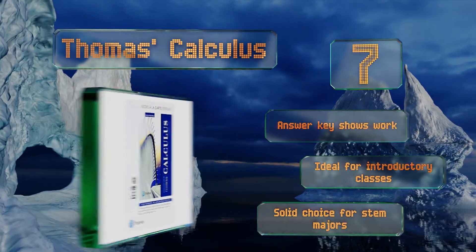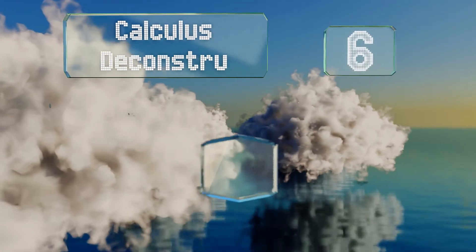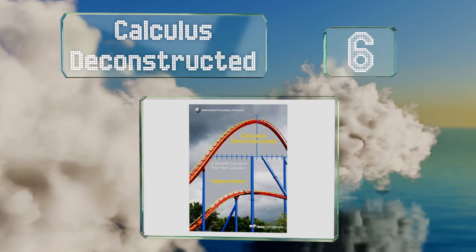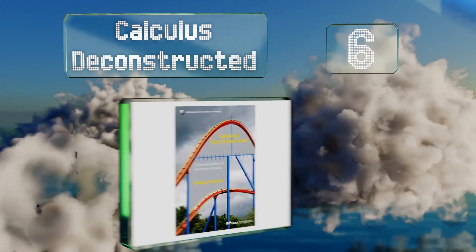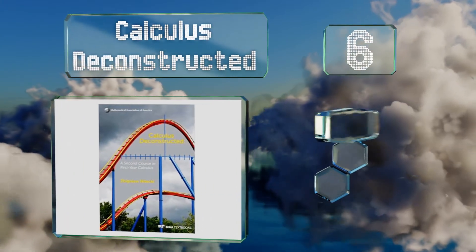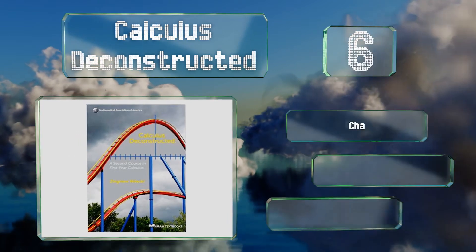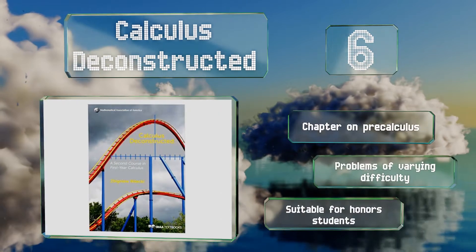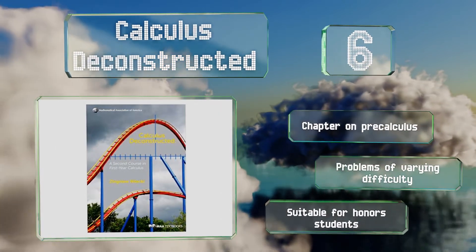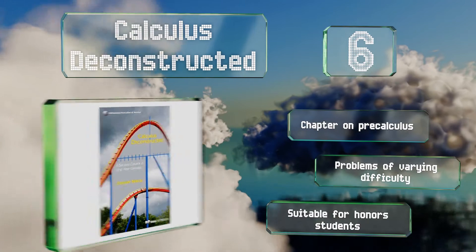Moving up our list to number six, for those autodidacts out there, Calculus Deconstructed presents the subject with plentiful examples and historical notes, which makes self-learning in this area a little less stressful. You won't need any prior knowledge of proofs either. It includes a chapter on pre-calculus and problems of varying difficulty. This one's suitable for honest students.